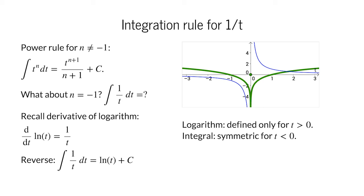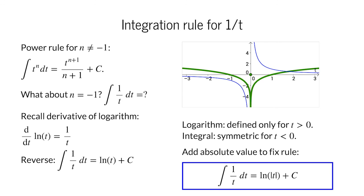Notice that the integral of 1 over t is symmetric for negative t. We can turn our logarithm into a symmetric function by first taking the absolute value of t before taking the logarithm. That doesn't change anything for positive t and gives us the result we need for negative t. The correct rule for the integral of 1 over t is the logarithm of the absolute value of t plus the constant c.